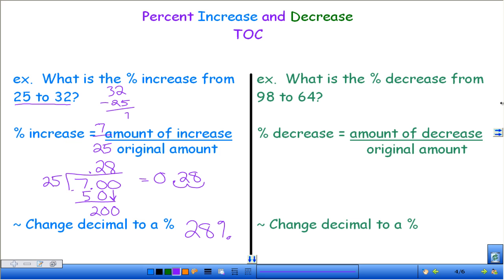So our answer is 28%. So going from 25 to 32 is a 28% increase. Which is about a quarter increase. 25% would be a quarter. So if we took a fourth of this and added it on, we'd get to about 32. Does that make sense? Questions on this one before we do an example of decrease?